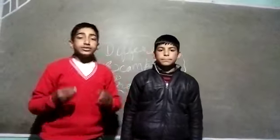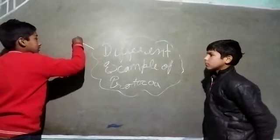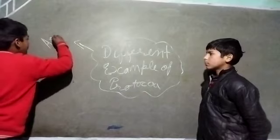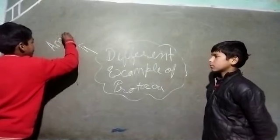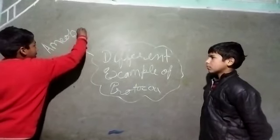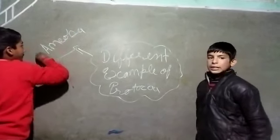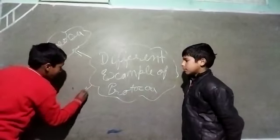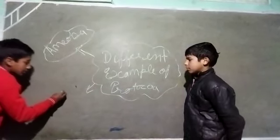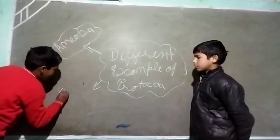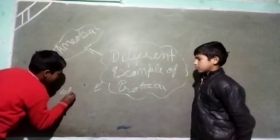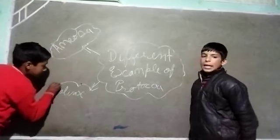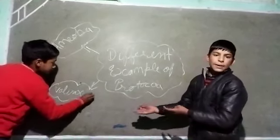Dear friends, the first example is Amoeba — A-M-E-B-A. The second example is Volvox — V-O-L-V-O-X.